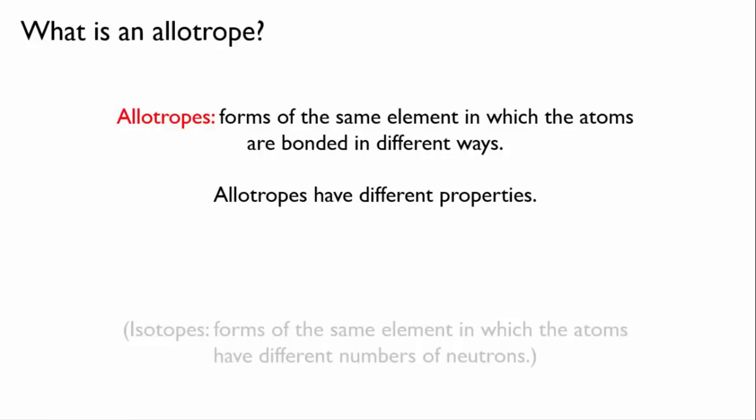Let's just recall that isotopes are different forms of the same element where the atoms have different numbers of neutrons. So don't get isotopes mixed up with allotropes.